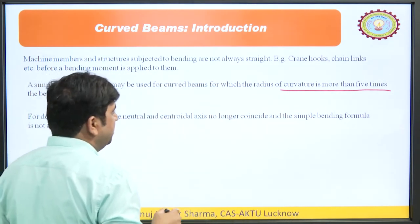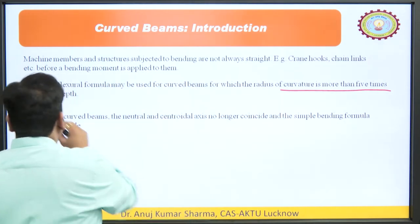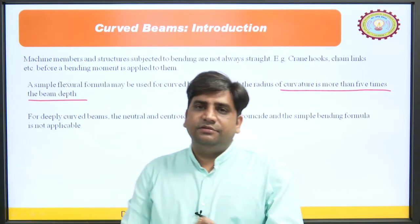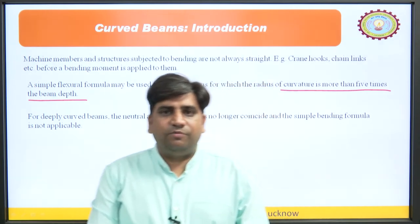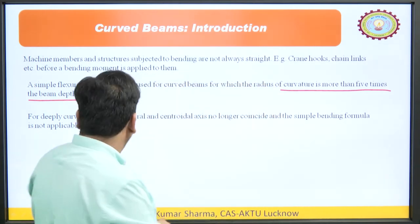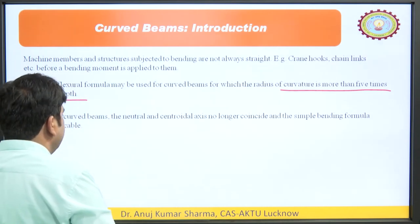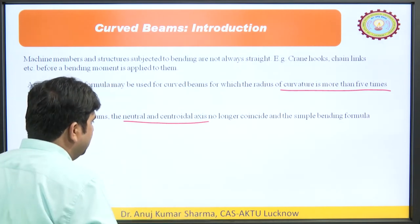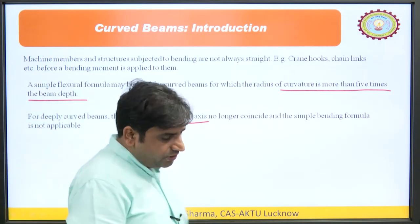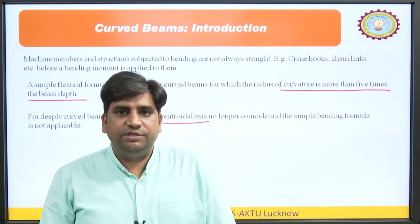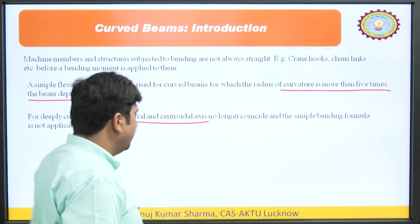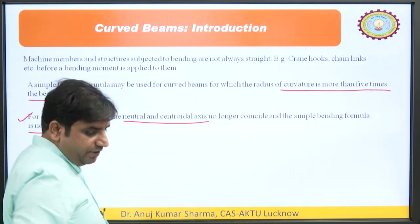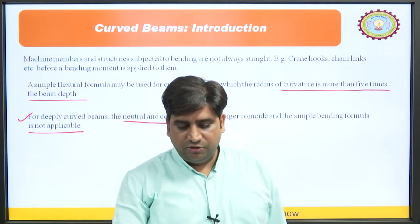If the radius of curvature is more than five times the beam depth, then we can apply the flexural formula; otherwise we cannot. For deeply curved beams, the neutral axis and the centroidal axis are two different axes. In simple straight beams these two axes coincide with each other, but in curved beams they do not. Therefore the simple bending formula is not applicable.